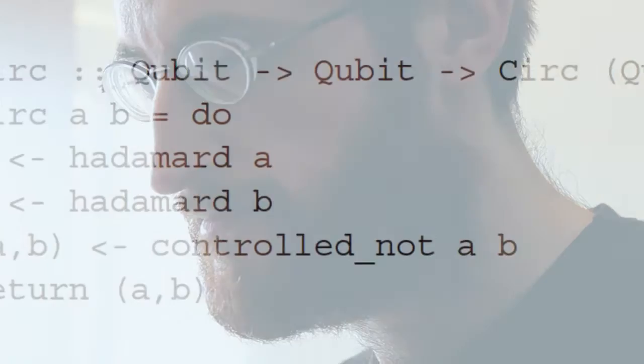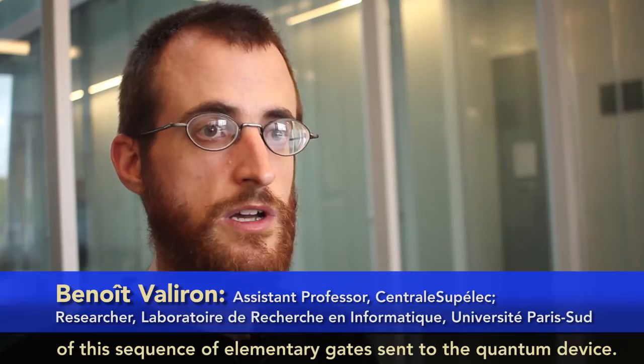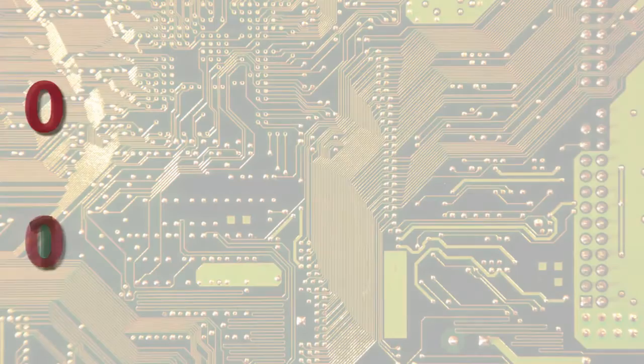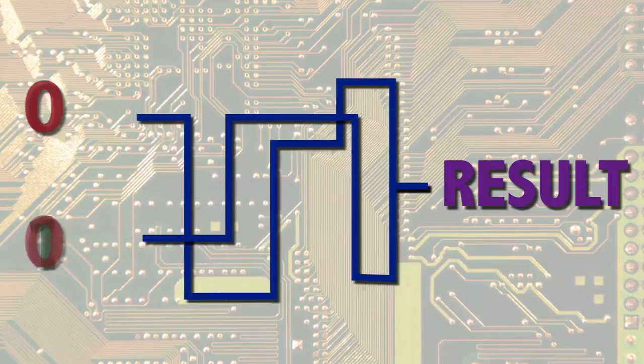His new language is Quipper, which runs on classical computers to turn computations into quantum circuits. The program is the generation of the sequence of instructions, of the sequence of elementary gates sent to the quantum device. Because of the nature of quantum mechanics, these gates must be reversible. That requires some tricks.